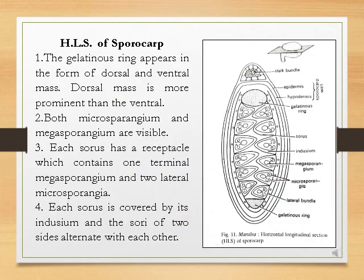In the horizontal longitudinal section of the sporocarp, you can find the gelatinous ring appearing in the form of dorsal and ventral mass. The dorsal mass is more prominent than the ventral. In the horizontal longitudinal section, you can find the presence of both microsporangium and megasporangium. Each sorus has its own receptacle which contains one terminal megasporangium and two lateral microsporangia. Each sorus is surrounded by its own indusium, and the sori of the two sides alternate with each other.